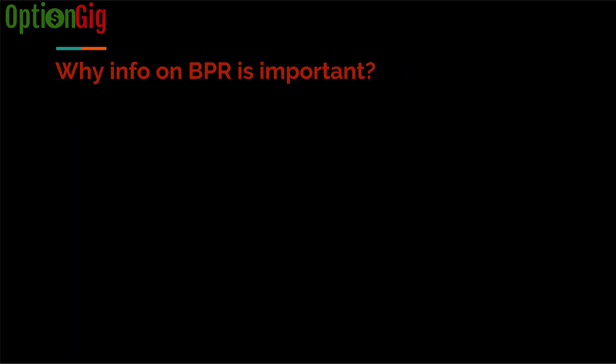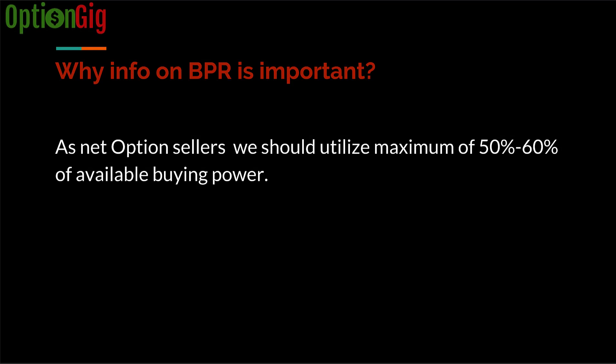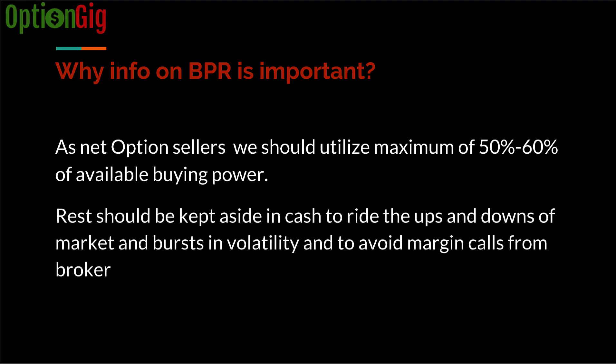Why is understanding buying power reduction important? As option sellers, we should know how much buying power we've consumed out of the total available. As we've discussed in our cardinal rules for option selling video, we should only utilize a maximum of 50 to 60 percent of available buying power in option trading. The rest should be kept in cash so we can ride the ups and downs of the market, avoid margin calls, and handle bursts in volatility. Make sure you are not consuming 80–90% of available buying power.